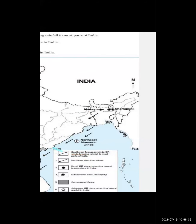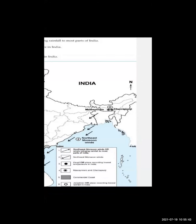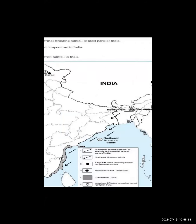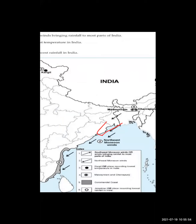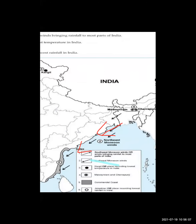The second question is northeast monsoon wind. When we are talking about the northeast monsoon wind, it is marked here. Mark it properly as northeast monsoon wind, draw the arrow, and then write it in the index.